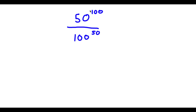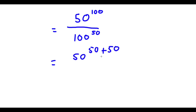Alright, so I have 50 to the power of 100 over 100 to the power of 50. So now 100, we can rewrite this as 50 plus 50. So now I have 50 to the power of 50 plus 50 over 100, which is the same thing as 2 times 50. So over 2 times 50 to the power of 50.